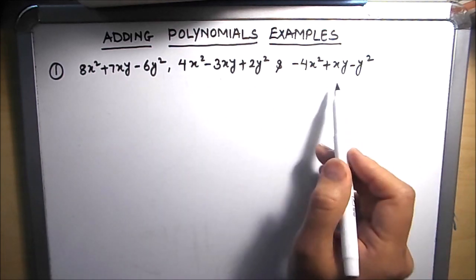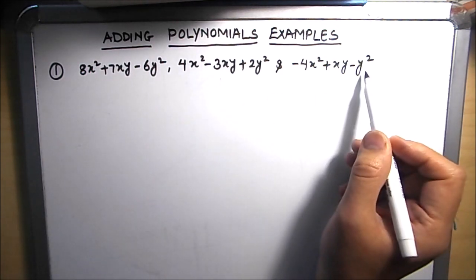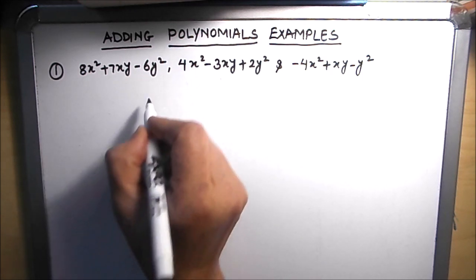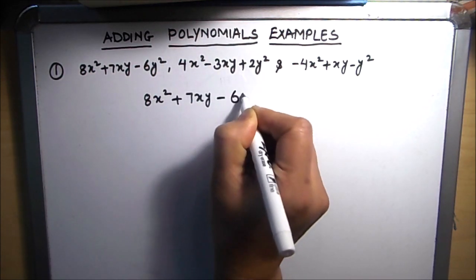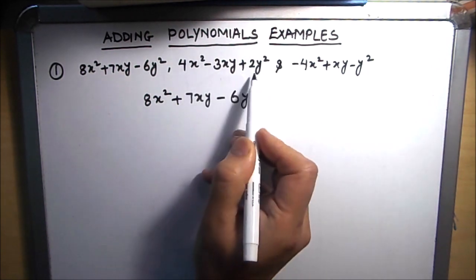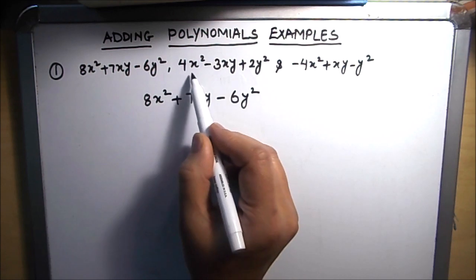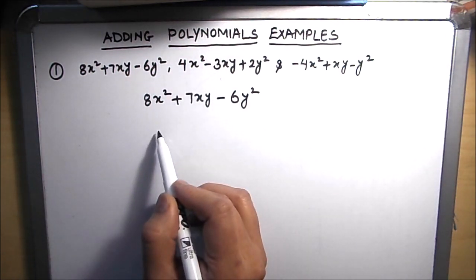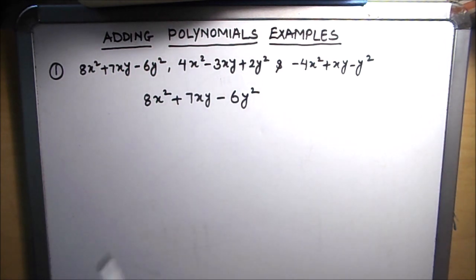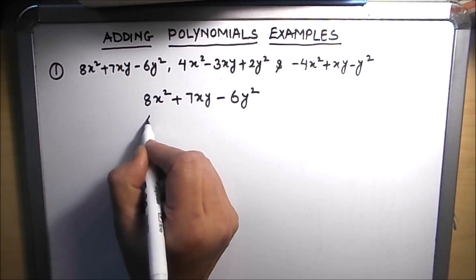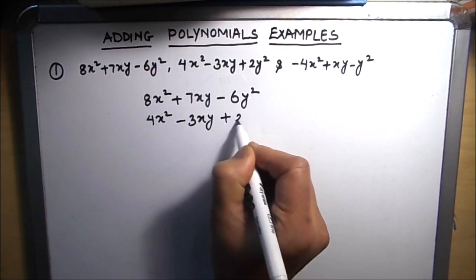For this type of polynomial addition, it is good practice to use the vertical method so that we can write the same variable terms together in a vertical line. Our first term is 8x² plus 7xy minus 6y². We write the second polynomial just below, keeping in mind that the x² term goes under x², the xy term under xy, and the y² term under y². So the second polynomial is 4x² minus 3xy plus 2y².